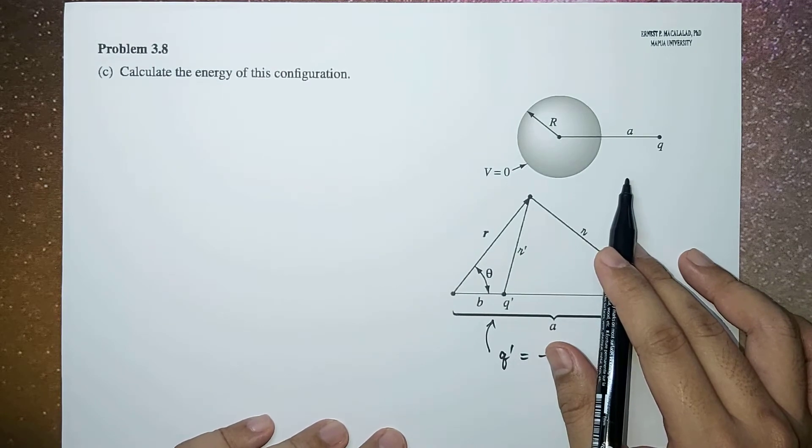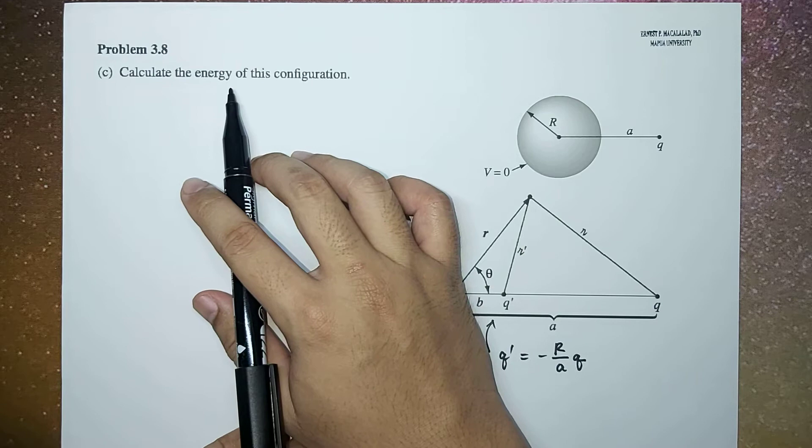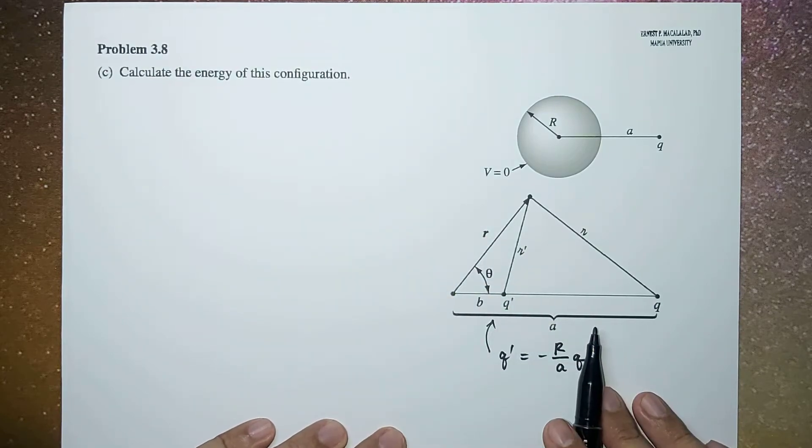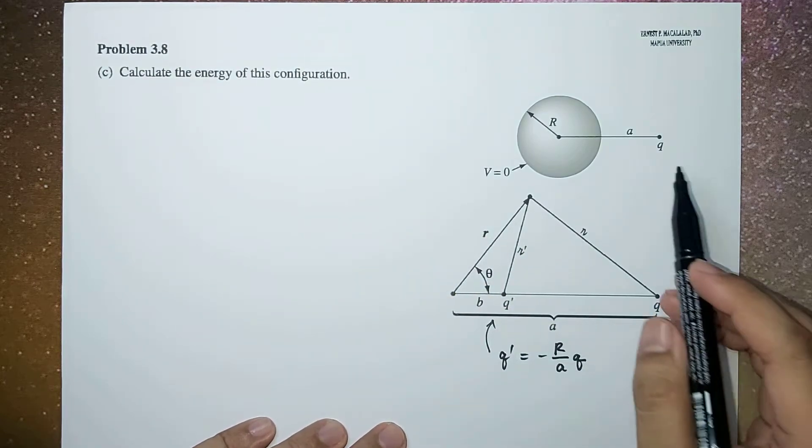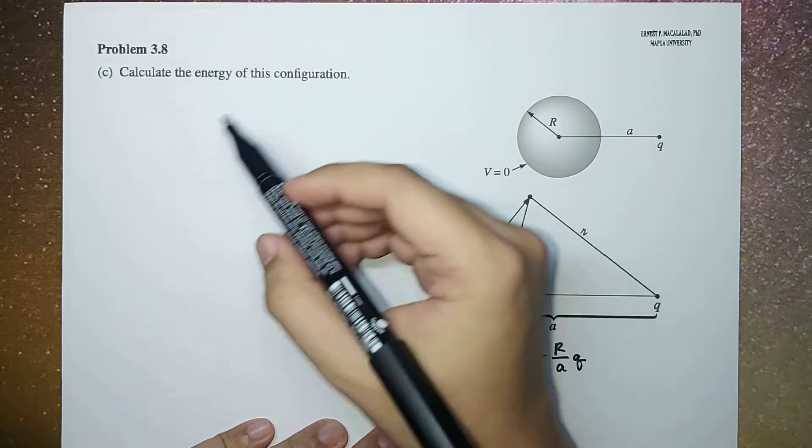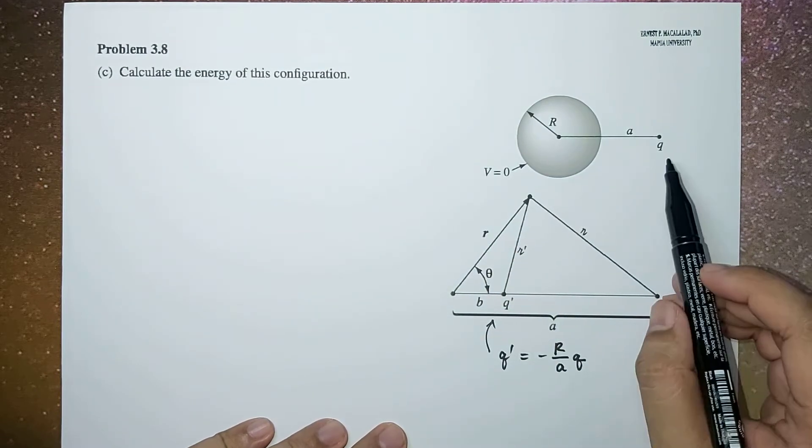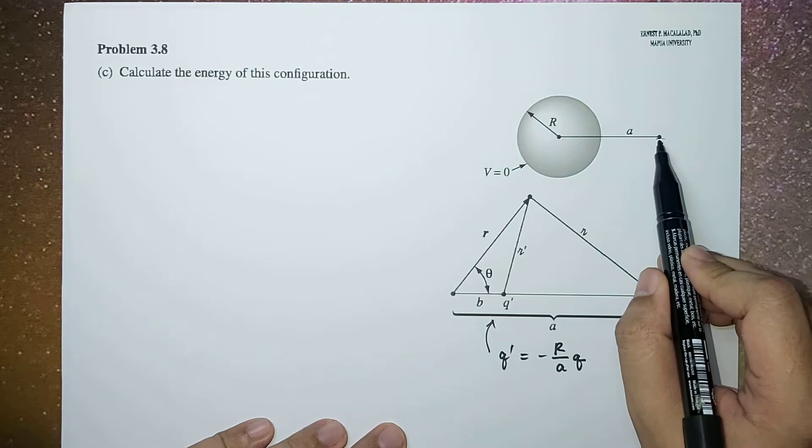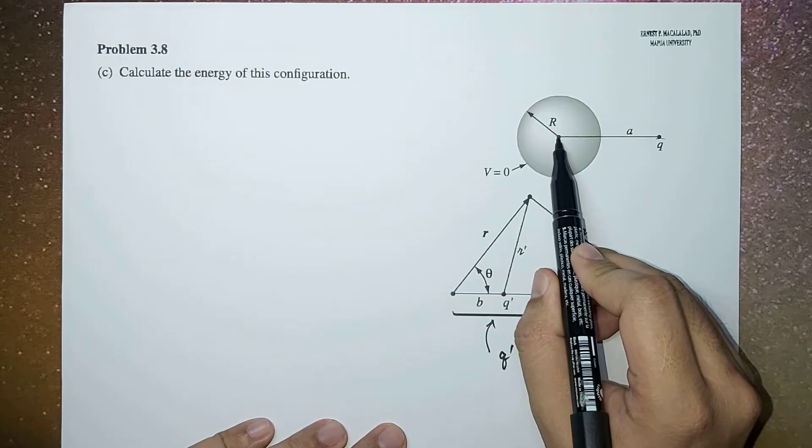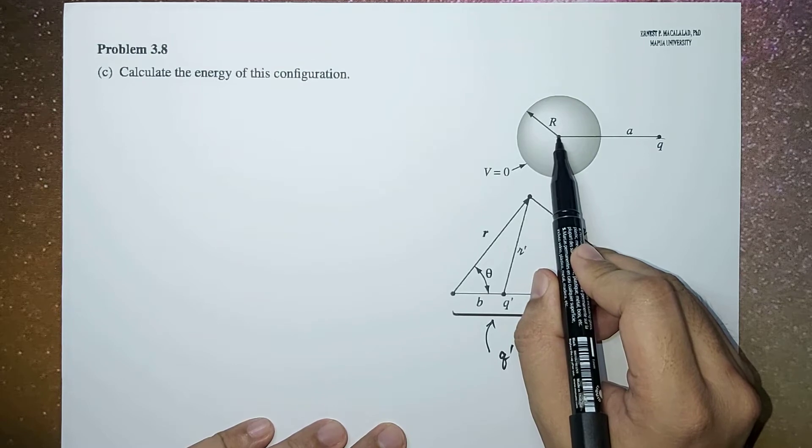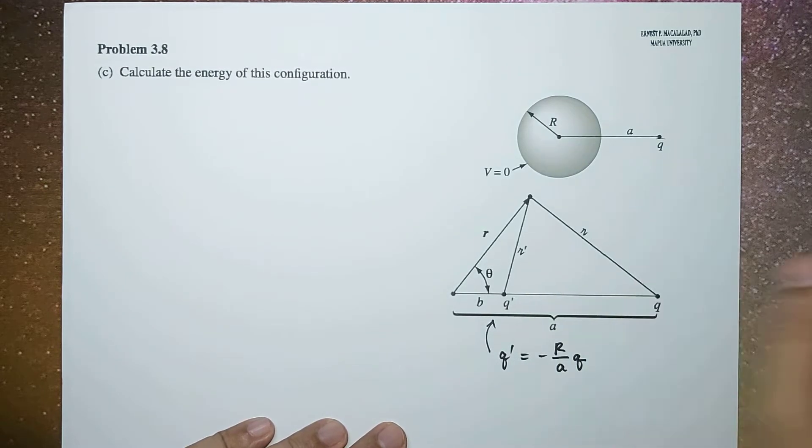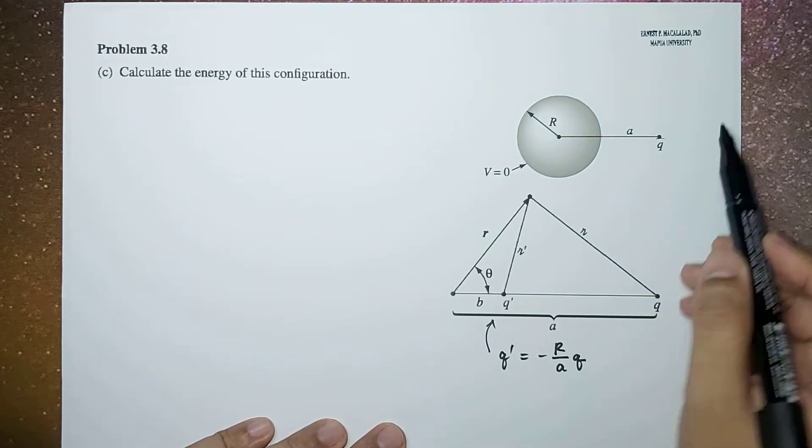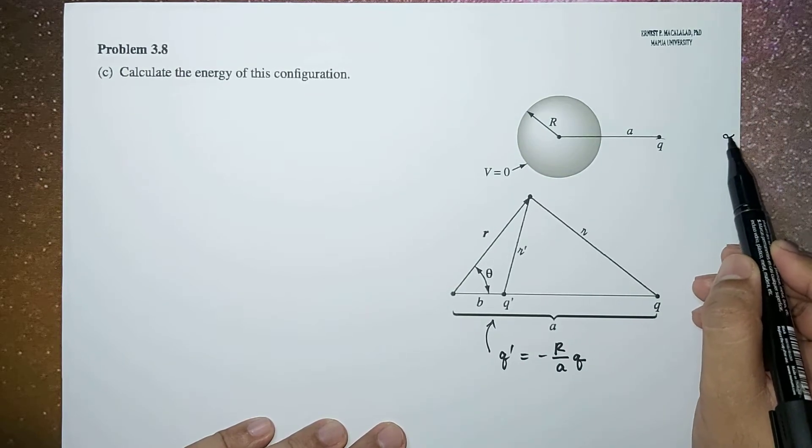Now if we want to calculate the energy of this configuration, what we're going to do is look for the work done for us to be able to place this charge at this point a away from the origin, or a away from the center of the sphere, from infinity.